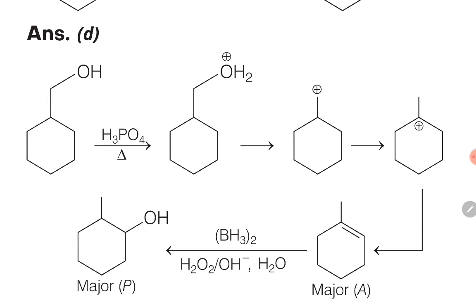After the formation of major product A, we treat it with BH₃ twice, then H₂O₂/OH⁻ in the presence of water — this is hydroboration oxidation. In hydroboration oxidation, alkene is converted to alcohol according to anti-Markovnikov rule: the OH group attaches to the carbon with more hydrogen, i.e., the carbon away from the center. So final product P has the OH group attached away from the center. In summary: after step 1, alcohol becomes alkene; after step 2, the alkene becomes an alcohol again according to anti-Markovnikov rule.